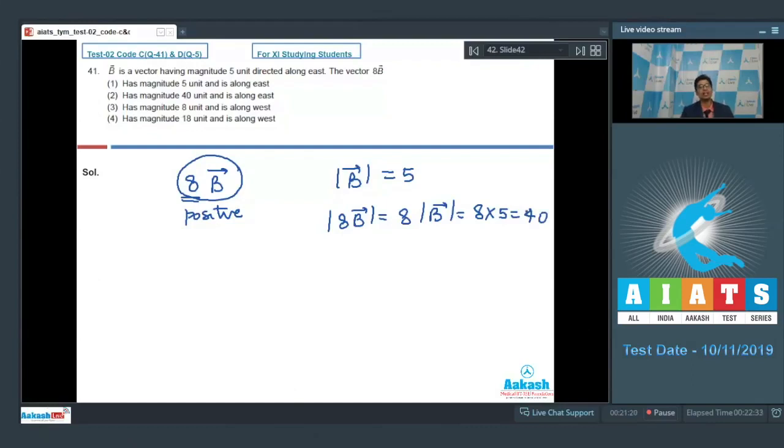Since 8 is a positive number, the direction of the vector remains unchanged, which means that the vector 8B has a magnitude of 40 units and is directed along east, which is the direction in which the vector B was aligned. Therefore, the correct answer for this question is option number 2.